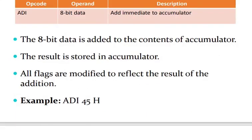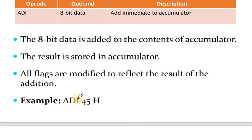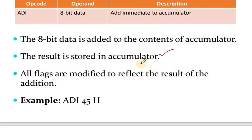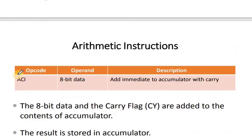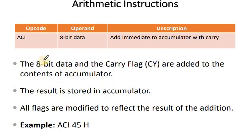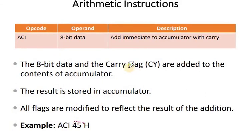ADI means Add Immediate — an 8-bit immediate data value is added directly to the contents of the accumulator, and the result is stored back in the accumulator. Since this is an addition operation, all flags are modified to reflect the result. Similarly, ACI is Add Immediate with Carry: the 8-bit immediate data and the carry flag are added to the accumulator, with all flags modified accordingly.